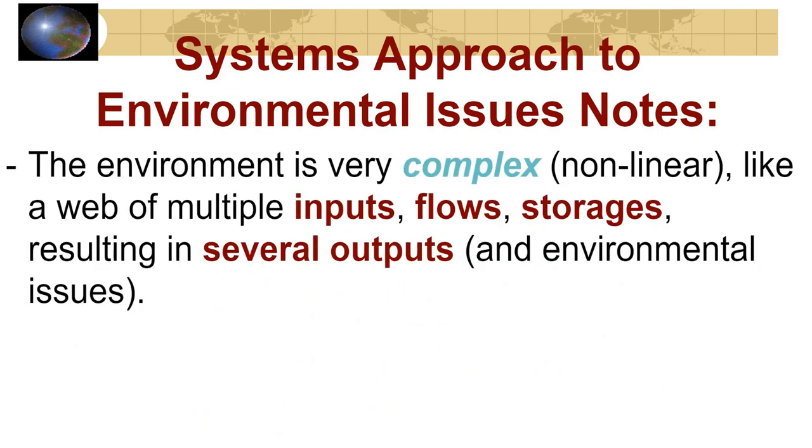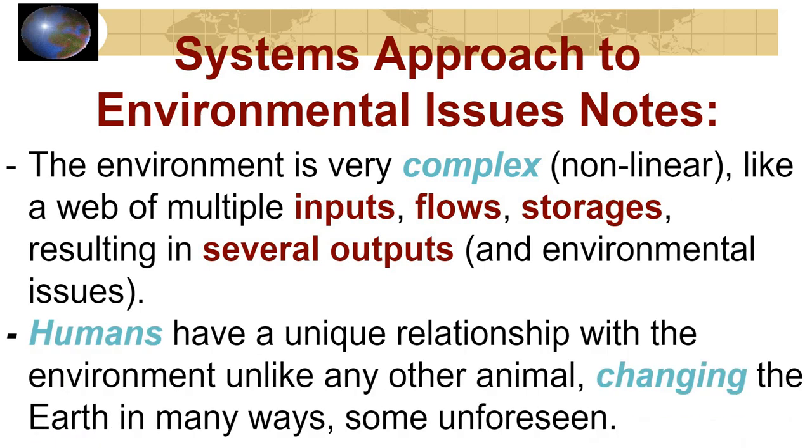An environmental system is fairly complex. It has inputs, outputs. There are going to be flows and storages in between, just like I demonstrated in my example on a respiratory system. Humans have a very unique relationship with their environment, which is unlike other animals. It's difficult to model human systems because they're always changing. They're not quite as constant as other things.